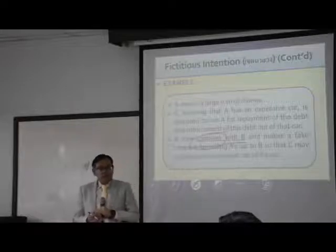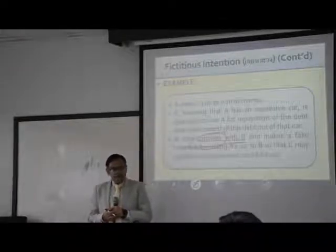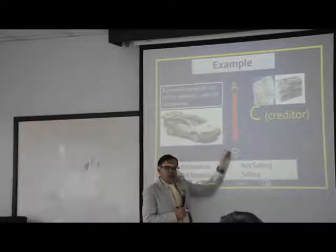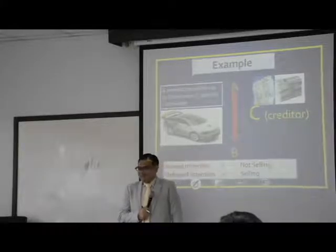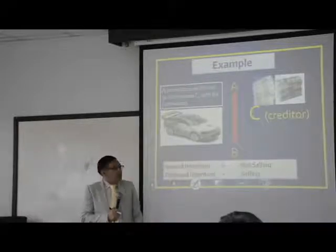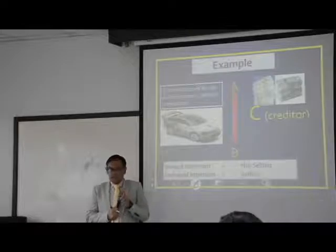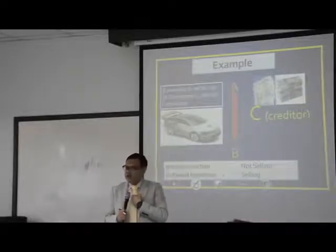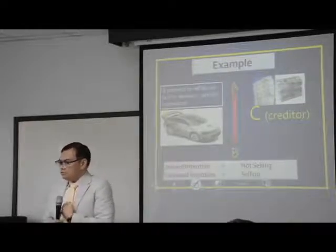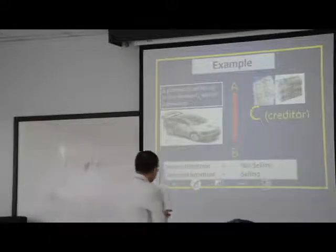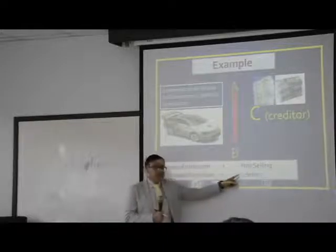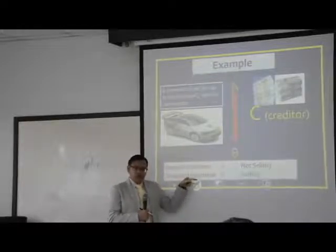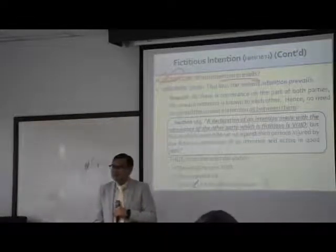A connives with B in pretending to sell his car to B. Both A and B know this very well. So there is no need to protect B at all. Both A and B know that this is the fake intention. What is the legal consequence flowing from this case? We are dealing with the conflict between the inward intention and the outward intention. Which one prevails? The inward one is what A has in his mind — it's not selling. He pretends to sell. What he expressed is that he wants to sell.